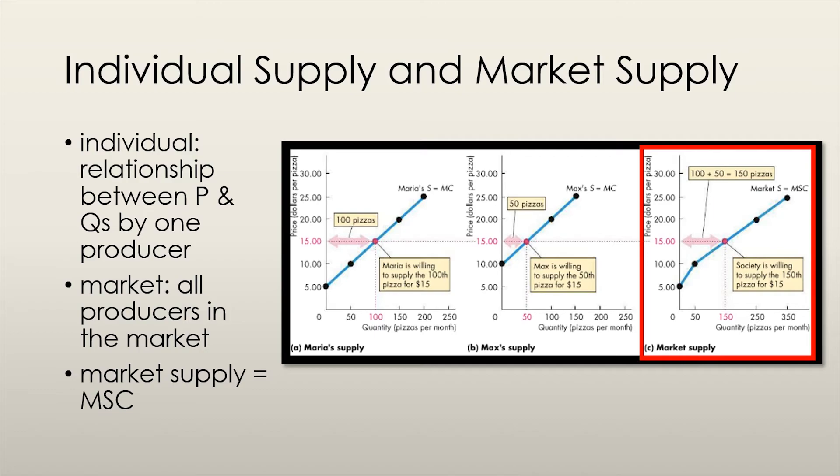Just as our demand curve could be seen as a marginal social benefit curve, we can call the market supply curve the marginal social cost curve. This curve represents the cost of producing an additional unit of the good for the market, not an individual supplier.